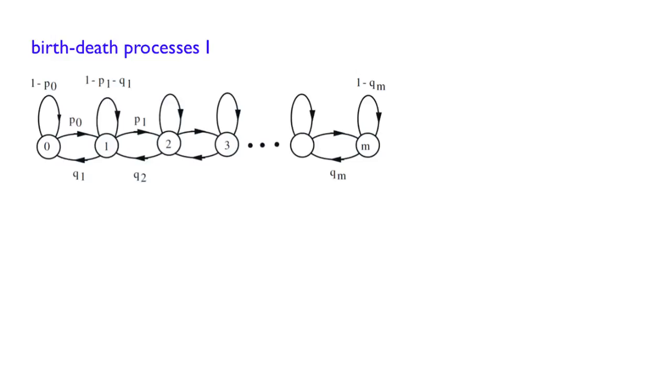We are going to spend the rest of this lecture by looking into an interesting subclass of Markov chains for which steady state convergence exists, the class of birth and death processes. So what is a birth and death process? It's a Markov chain whose diagram looks like this.